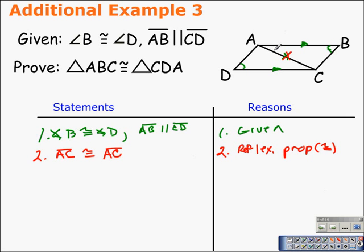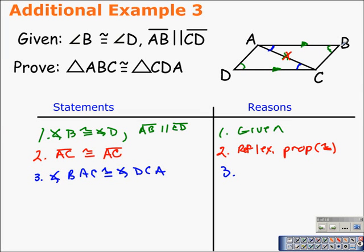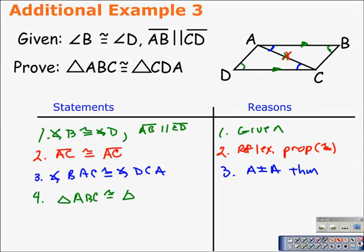Since we have two sides, we need side-angle-side. The angles we need to establish as congruent are angle BAC and angle DCA. Since these are the parallel lines, these are alternate interior angles, so that would be the alternate interior angles theorem. We now have enough to write our prove statement: triangle ABC is congruent to triangle CDA by side-angle-side.